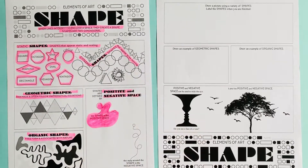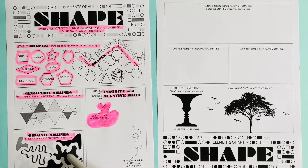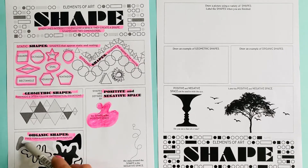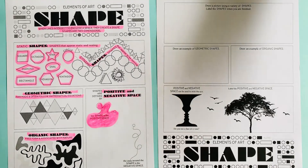All of the area around the shape is the negative space. If we look at this organic shapes picture here, the positive space is where the shape is, and the negative space is all of the white area around it.